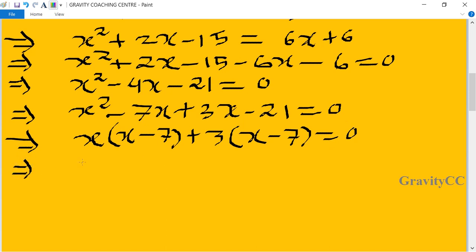Now we take x minus 7 as a common, so we have x plus 3 equal to 0, and x minus 7 equal to 0.